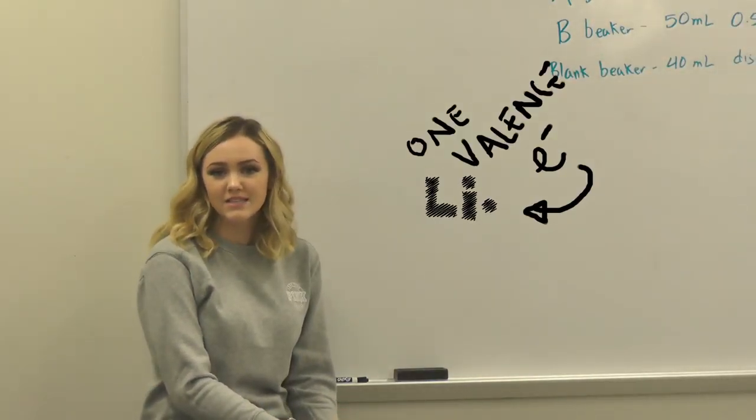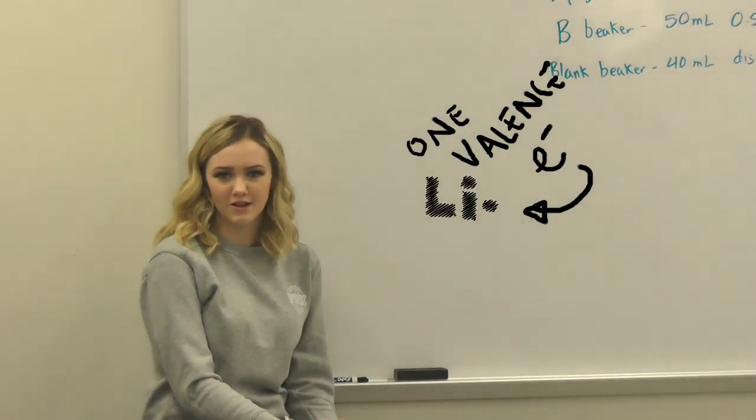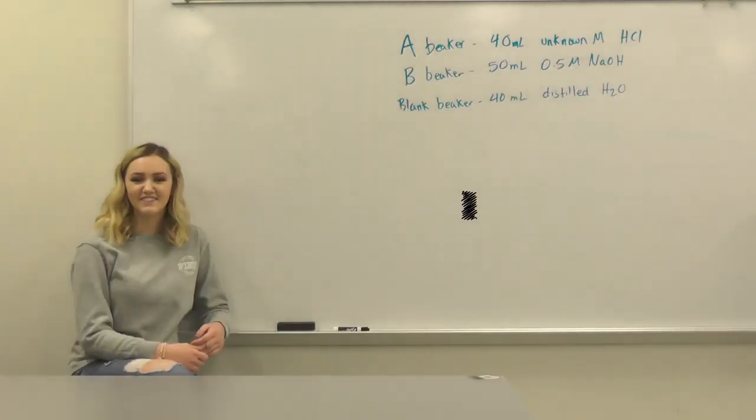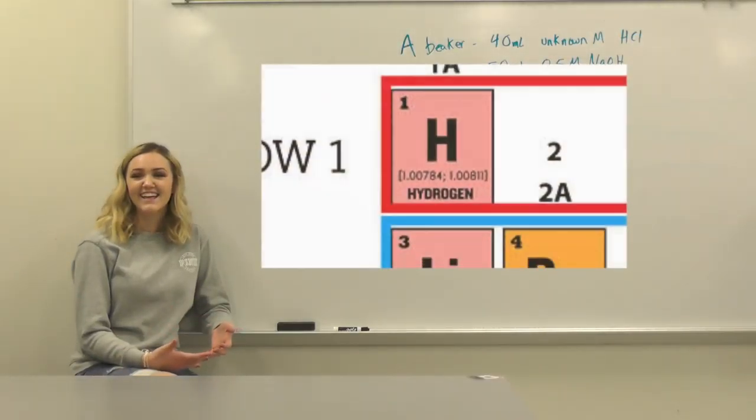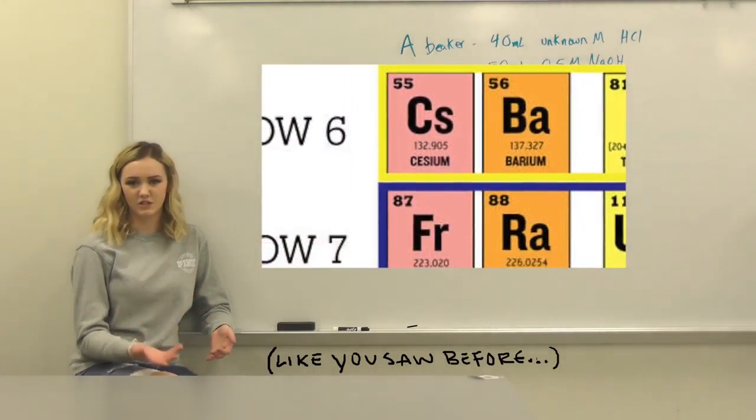The electron dot structure is basically a diagram that shows valence electrons as dots. For example, in group 1a, each element has one dot representing their valence electron.